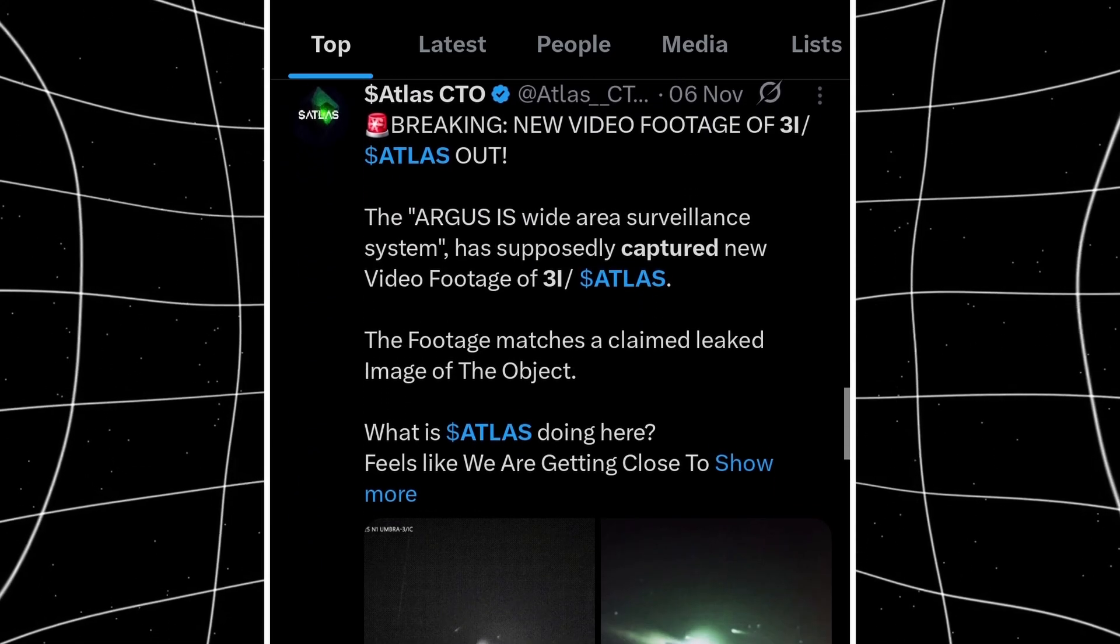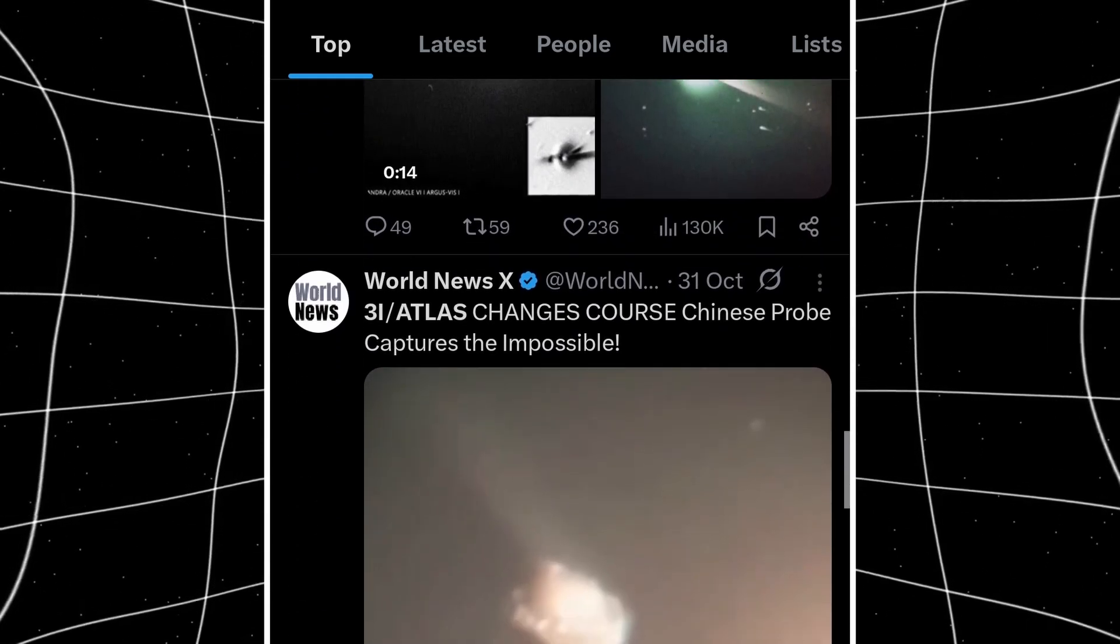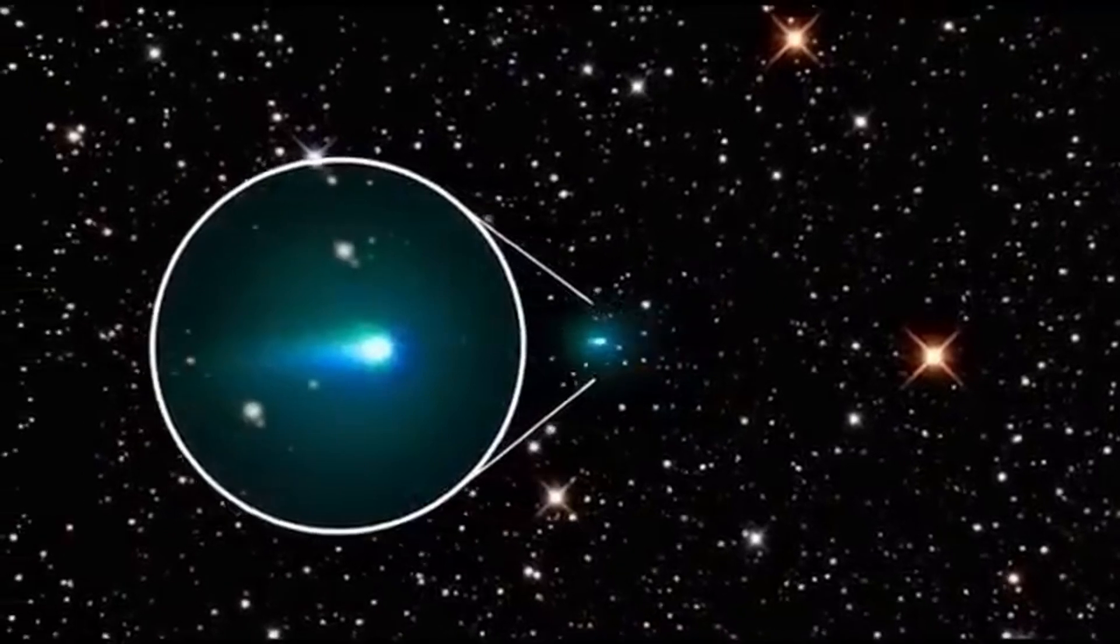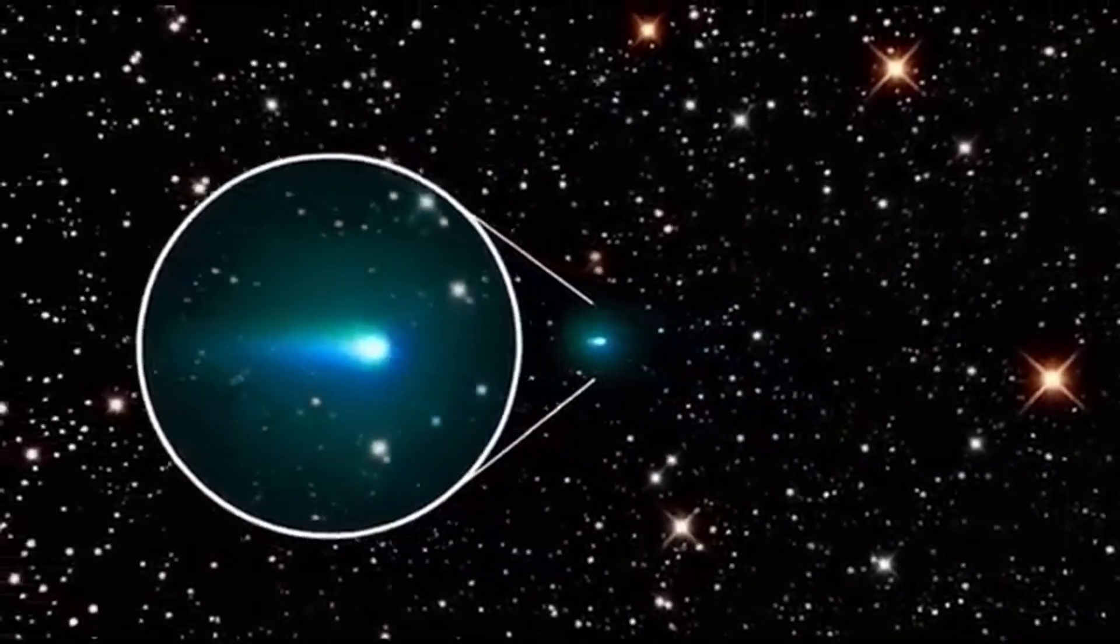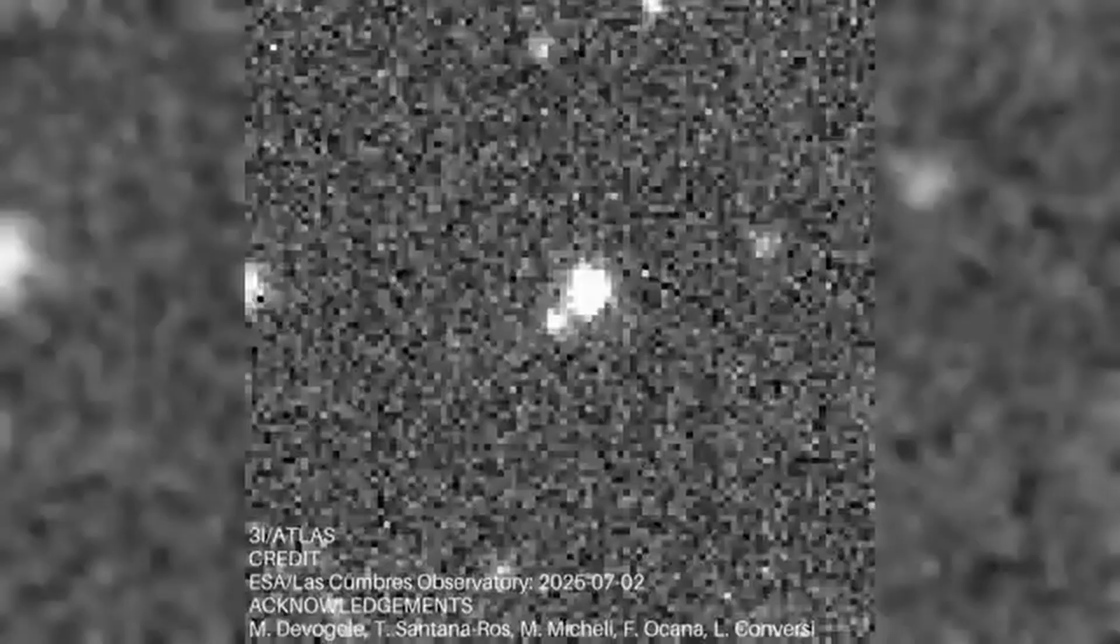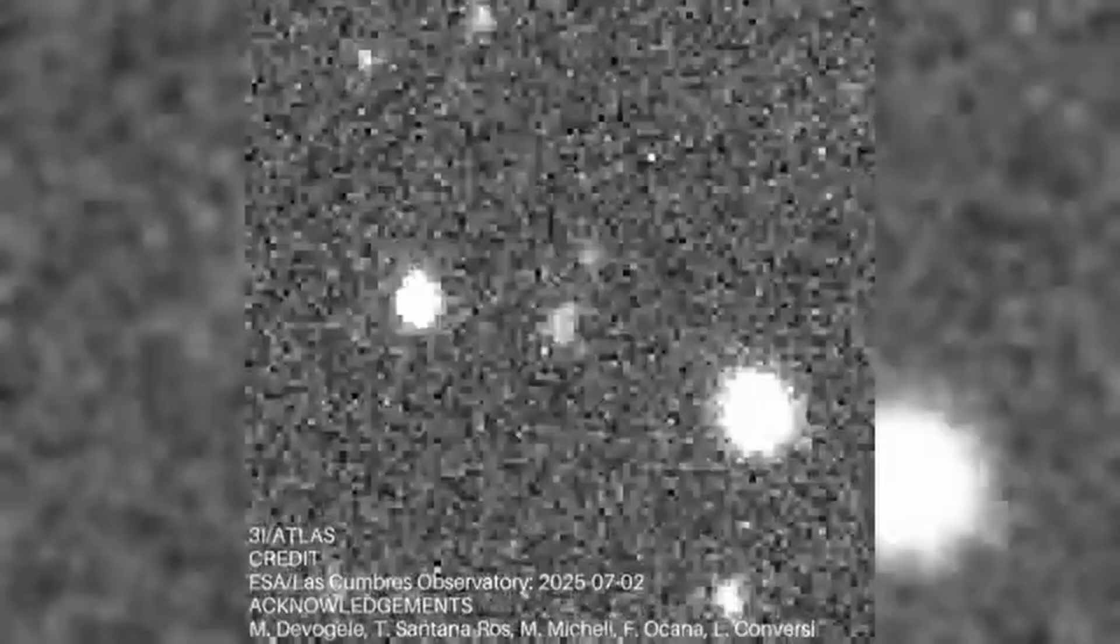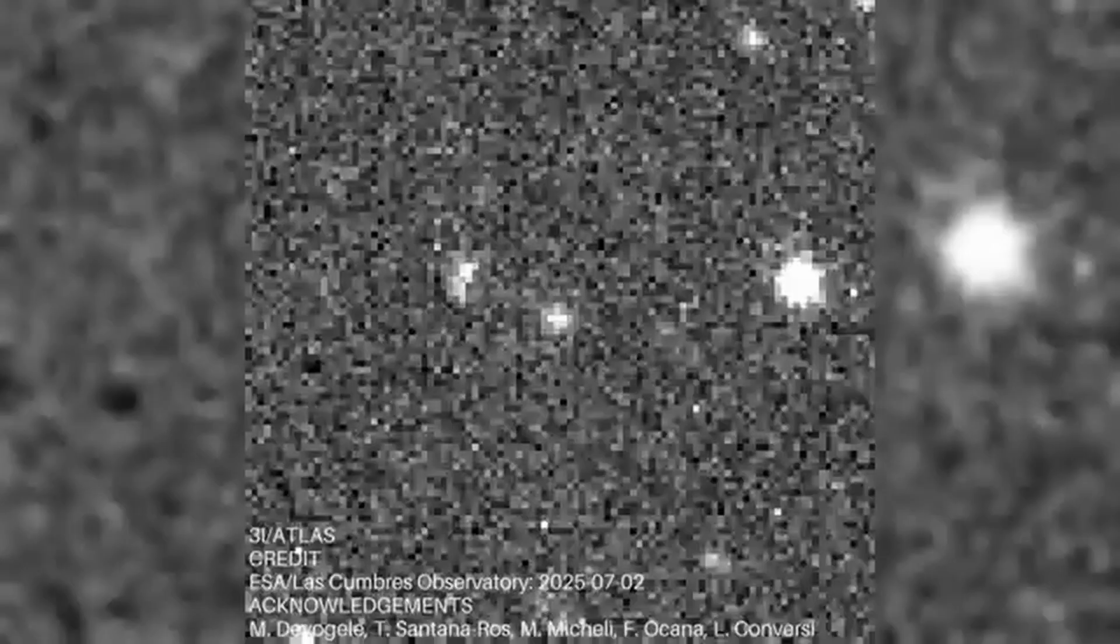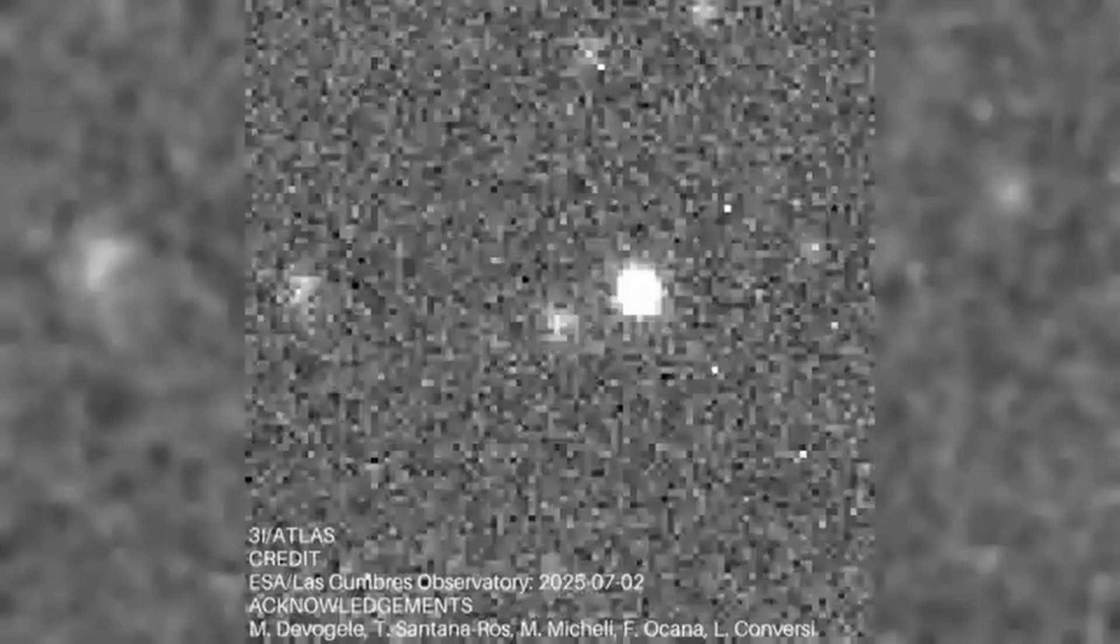Now let's zoom out. Because while 3i Atlas is doing its thing 2 AU away, the universe is reminding us what normal actually looks like. The Euclid Space Telescope captured NGC 6946, a barred spiral galaxy nearly 400 million light years away. Sweeping arms, blue star forming regions. Bright core.